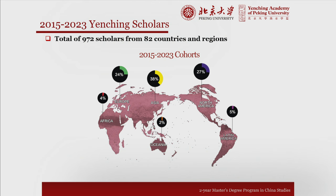We have now admitted nine cohorts of Yanjing scholars over the last nine years. Those considering applying for the 2024 intake would be the tenth cohort. Over the last nine cohorts, we have brought in just under a thousand scholars from 82 different countries and regions. The breakdown is approximately 40% from Asia, 25% from Europe including the UK, just under 30% from North America, 4% from Africa, 2% from Oceania, and 5% from Latin America. We certainly have room for improvement to bring more scholars from the developing world. Scholars who join our program come from all walks of life with different cultural, political, religious, and regional backgrounds—a highly diverse, very engaging student community.